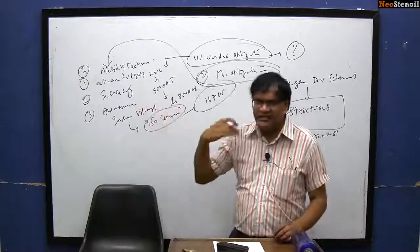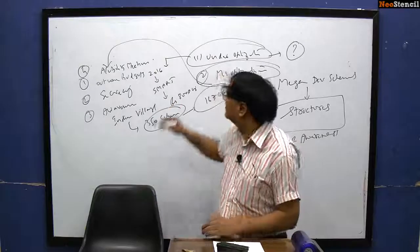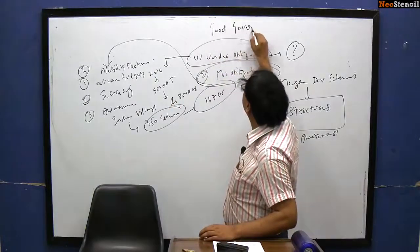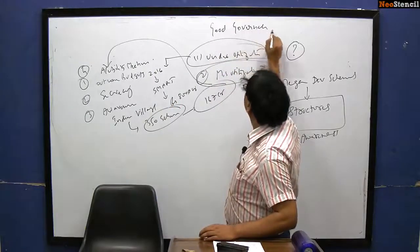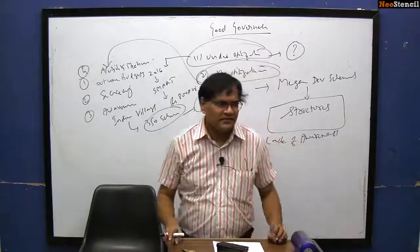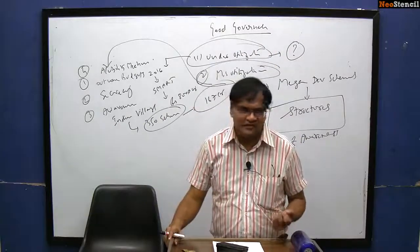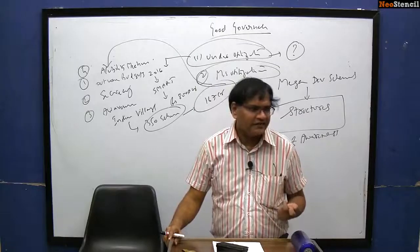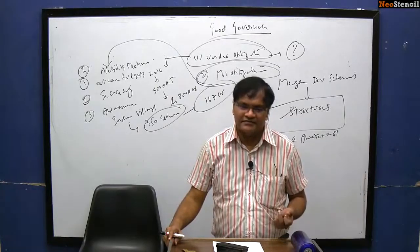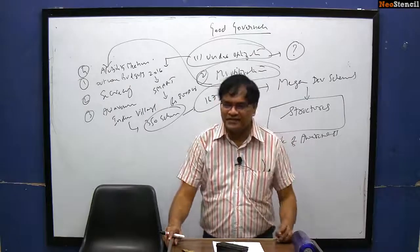After writing all these points, you have to come out with solutions. The solutions are simple: the government must ensure good governance in implementation of developmental and welfare schemes. Good governance means participation, transparency, accountability, and decentralization — all these should be part of implementation.